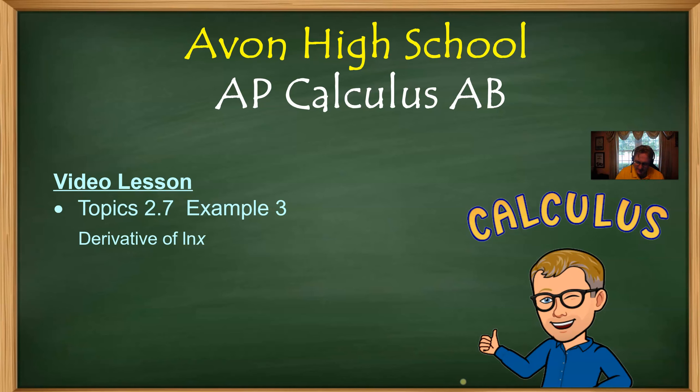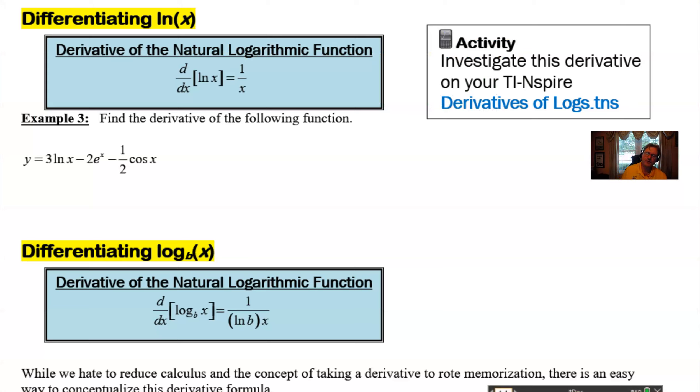So let's take a look. In your notes on the page where it begins at the top with differentiating ln of x, we don't mess around. We jump right into the formula. And as you can see, it's the natural log of x derivative is 1 divided by x. We have to know that. We have to memorize that.